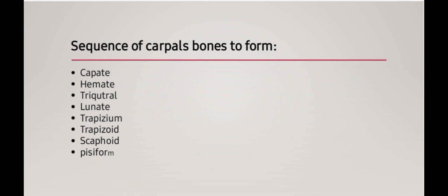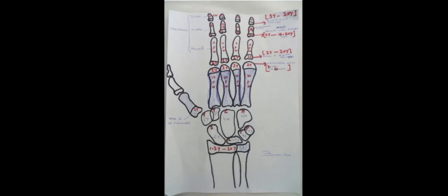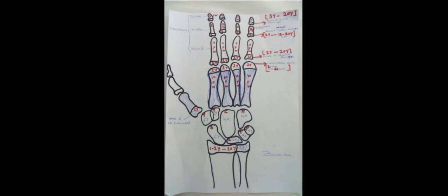The first carpal bone to appear is the capitate, subsequently hamate, triquetral, lunate, trapezium, trapezoid, scaphoid, and pisiform. A doctor should also know the order of the carpal bones in the left wrist. In the first row, lateral to medial: scaphoid, lunate, triquetral, and pisiform. In the second row, lateral to medial: trapezium, trapezoid, capitate, and hamate.